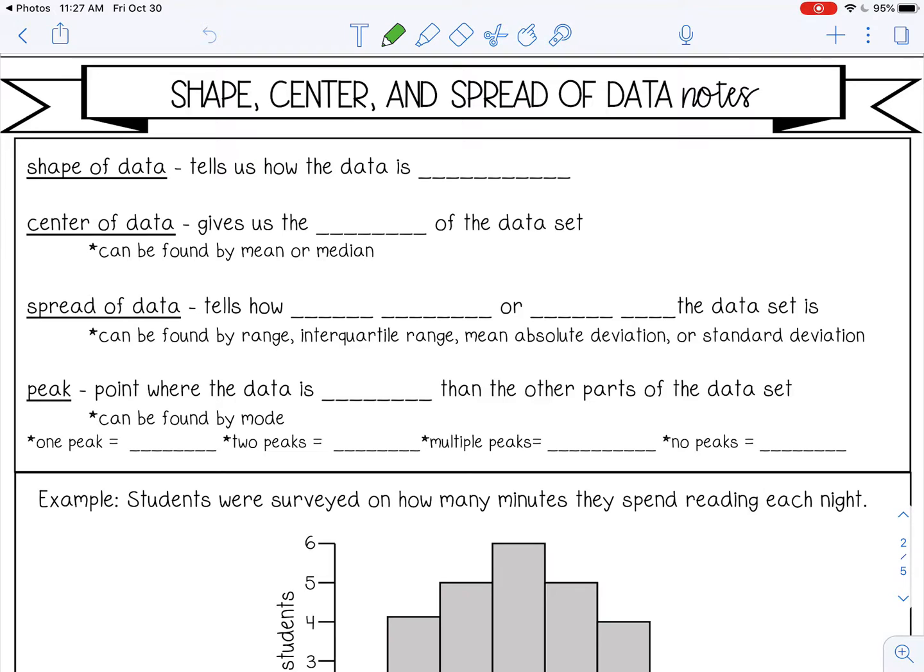So the shape of data tells us how the data is distributed. Is it all really close together? Is it spread apart? Do all of the data points kind of get close to really one number or are they close to two numbers?